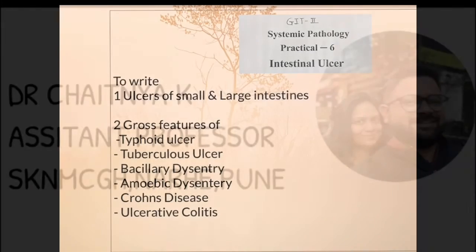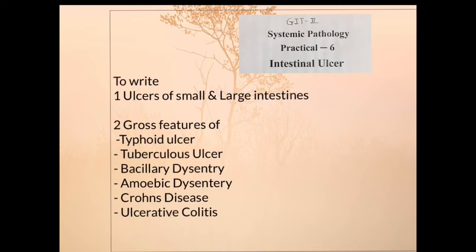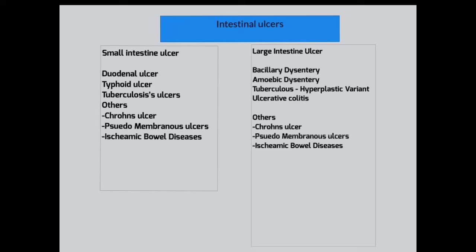Hello, my name is Dr. Chaitanya. Welcome to my new YouTube video. This is practical number six of the GIT. In this practical we will see the gross features of ulcers of different infection regions. There are basically two types of intestine: small intestine and large intestine. These two intestines have separate types of ulcers. In the small intestine, ulcers most commonly originate from duodenal ulcers, typhoid ulcers, or tuberculosis ulcers. In the large intestine, bacillary, amoebic, and tuberculosis hypoplastic variants are more common. Crohn's ulcer is common in both small and large intestine, as is pseudomembranous colitis and ischemic bowel disease.